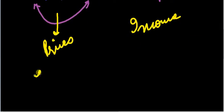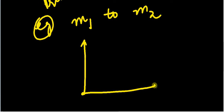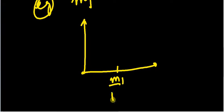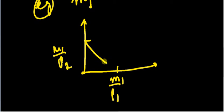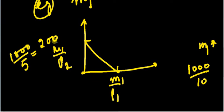So prices and income can change the budget line. Let's take the case where your income increases from M1 to M2. Initially, for a given income M1, my intercepts were M1/P1 and M1/P2. Now my income has increased — for example, income was 1000, price of good 1 was 10, and price of good 2 was 5.